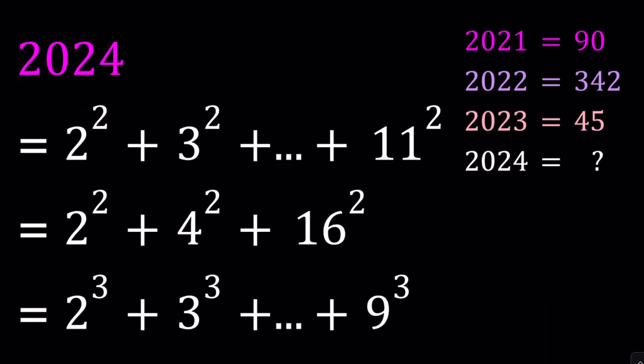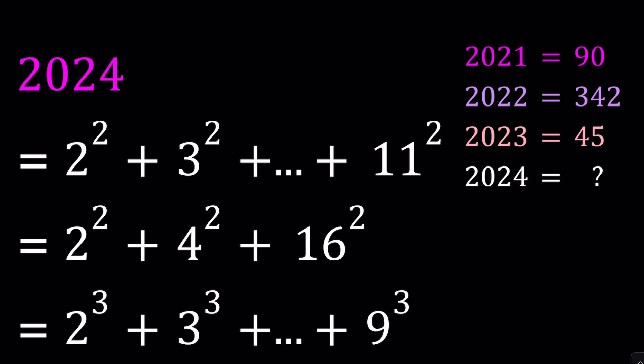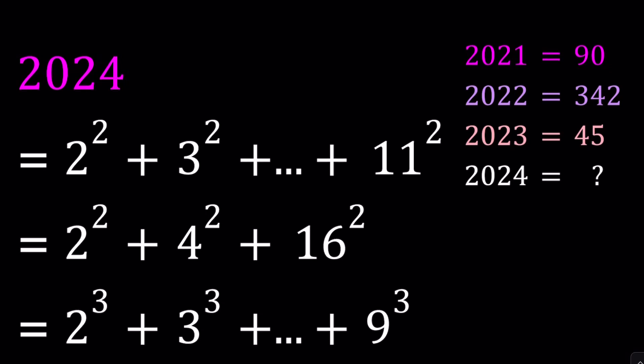So 2024 can be written as a sum of consecutive squares, 2 squared plus 3 squared all the way up to 11 squared. Or it can be written as a sum of 3 squares, which are also powers of 2, 2 to the 2nd, 2 to the 4th, or 2 to the 1st, 2 to the 2nd, and 2 to the 4th as the bases.